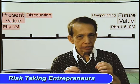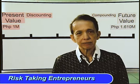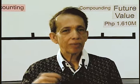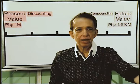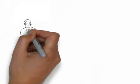Still other entrepreneurs are risk takers — they are bolder in their investments and might be expecting yields going up to 30%. Thus, these different entrepreneurs would have different future value expectations of their investments today. They'll be using different compound factors and also different discount factors to convert future values into present values.